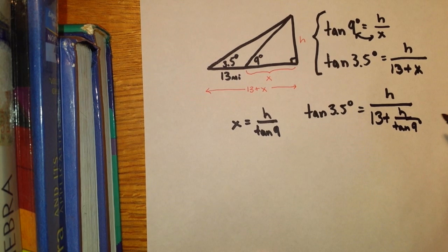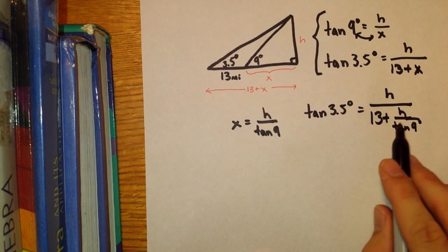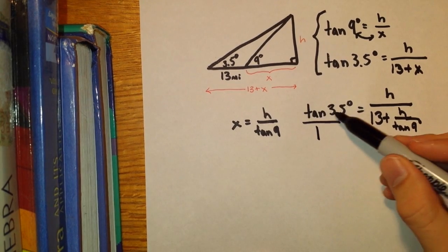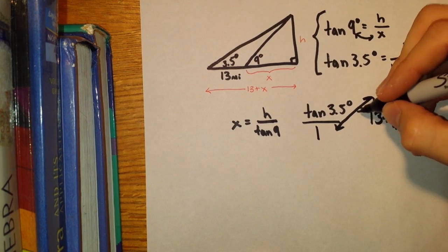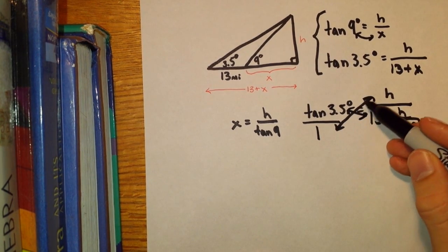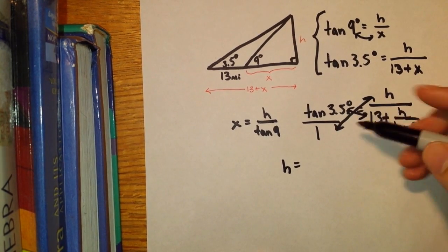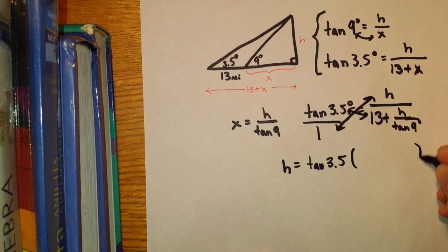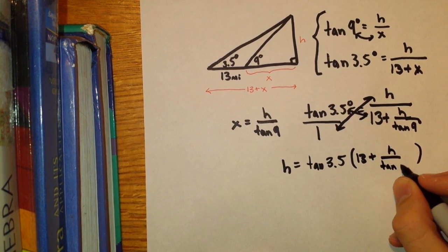To solve this, I've done it a few ways. The algebra here, you can take many different directions. Some of my students thought about getting common denominators with the tangent of 9. Some of them converted it to decimals. For me, the easiest way to solve this was write tangent of 3.5 over 1, and then use cross multiplication. On this diagonal, 1 times H gives you H, and then on the other diagonal, you'll have tangent of 3.5 times 13 plus H over tangent of 9.